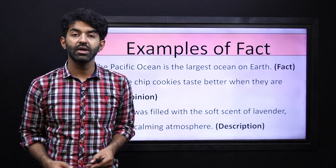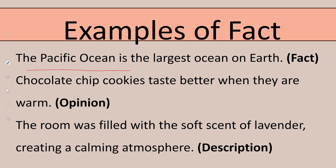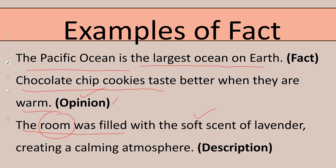Let's look at some examples. 'The Pacific Ocean is the largest ocean on earth' — that is a fact. 'Chocolate chip cookies taste better when they are warm' — is it a fact? No, this is an opinion. 'The room was filled with soft scent of lavender, creating a calming atmosphere' — this is so much detail about the room: its soft scent, fragrance of lavender, creating a calming atmosphere. This is an example of description. The cookies statement is an opinion — somebody can say no, it does not taste better. It varies from person to person, so it is an opinion, and we cannot prove opinions.